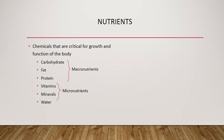We further classify nutrients as either macro or micro. Carbohydrates, fats, and proteins are our macronutrients. Vitamins and minerals are our micronutrients, and water is in its own category. Macronutrients are called macro because our body requires them in large quantities. Micronutrients are required by the body in smaller quantities.